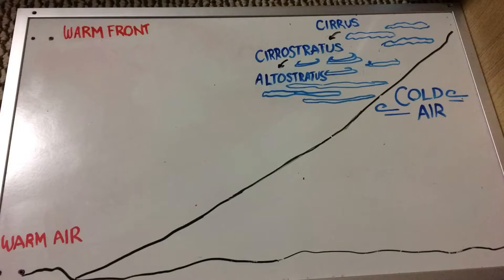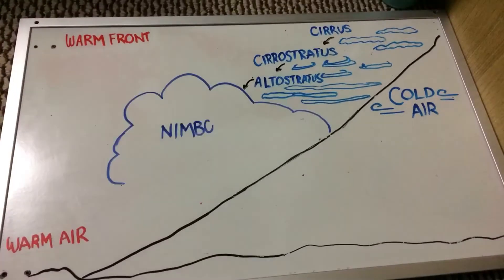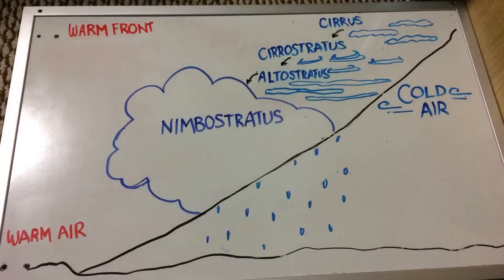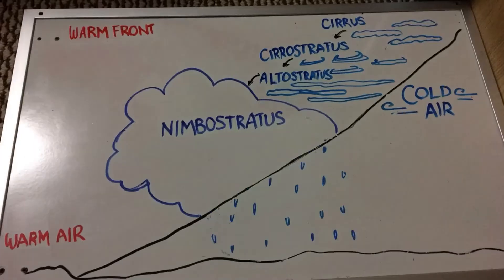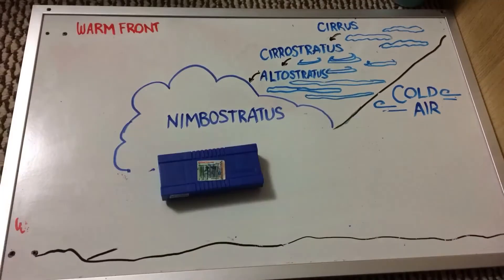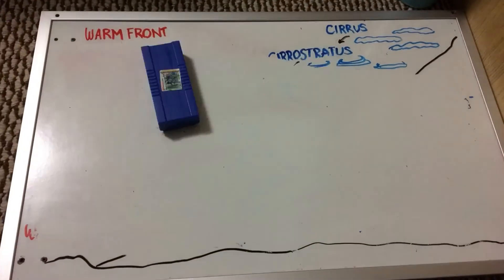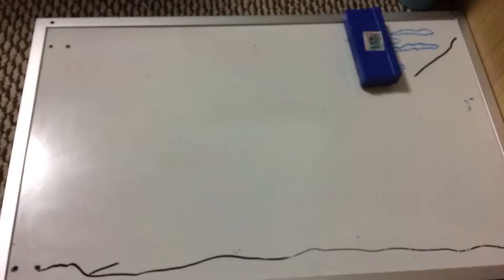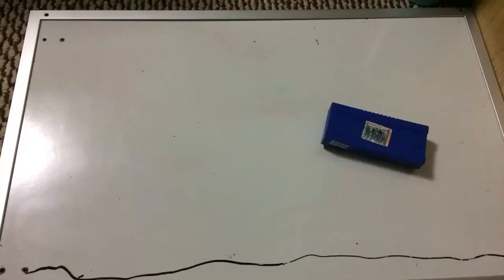When the warm front comes nearer, the clouds get thicker. The cirrus clouds will then turn into cirrostratus and altostratus clouds. Finally, a cloud called nimbostratus makes rain. This rain covers a pretty great distance as the front slowly moves.